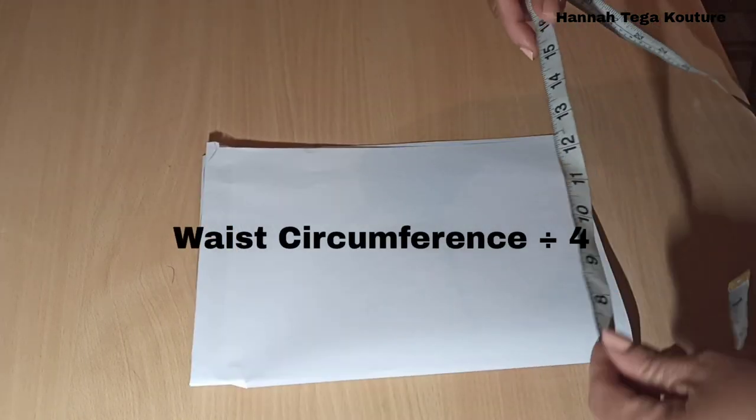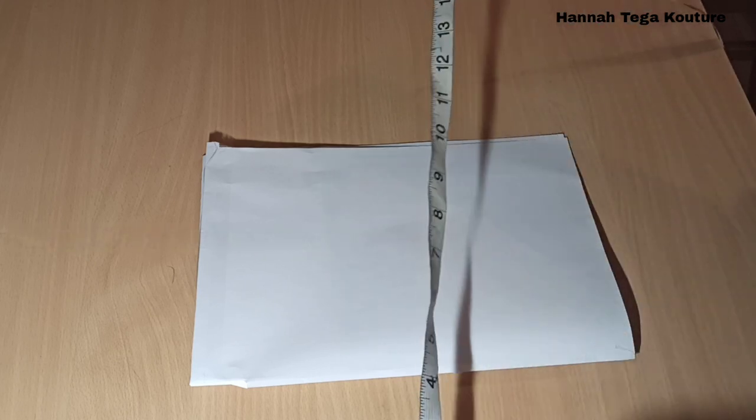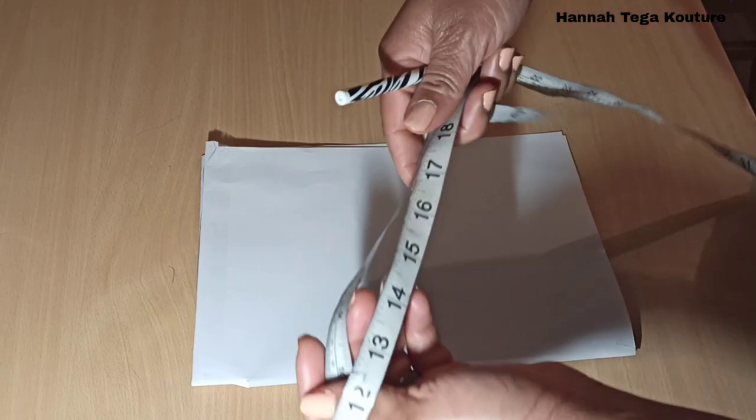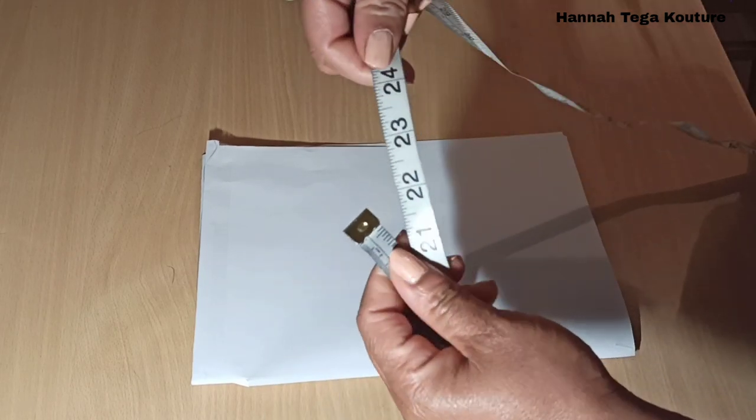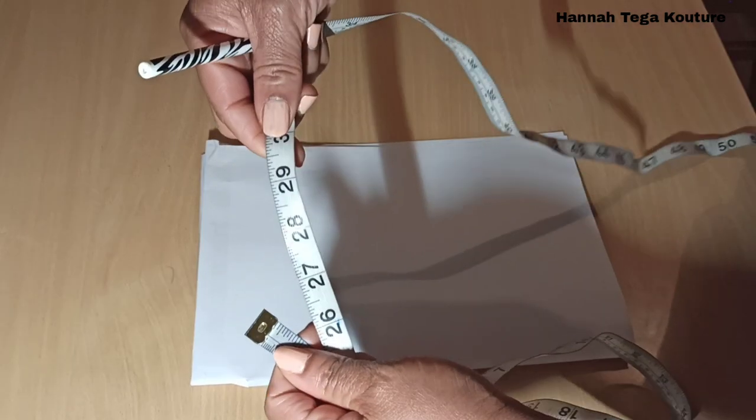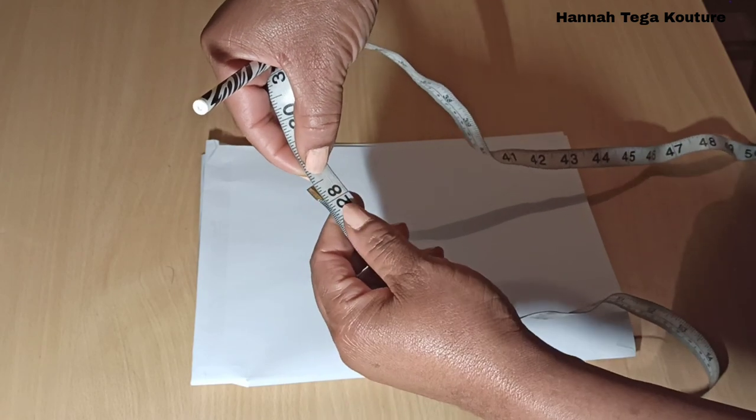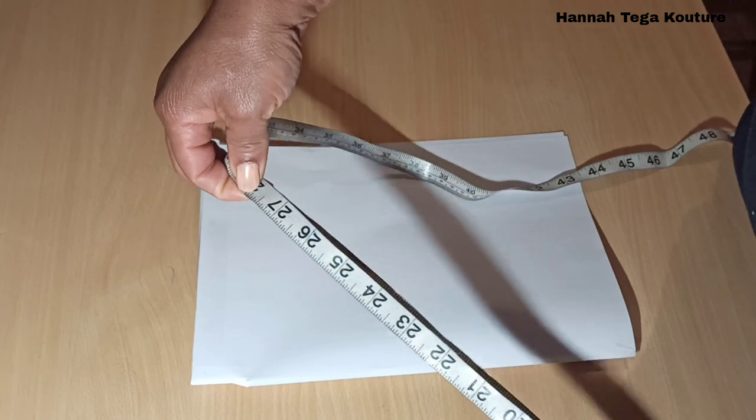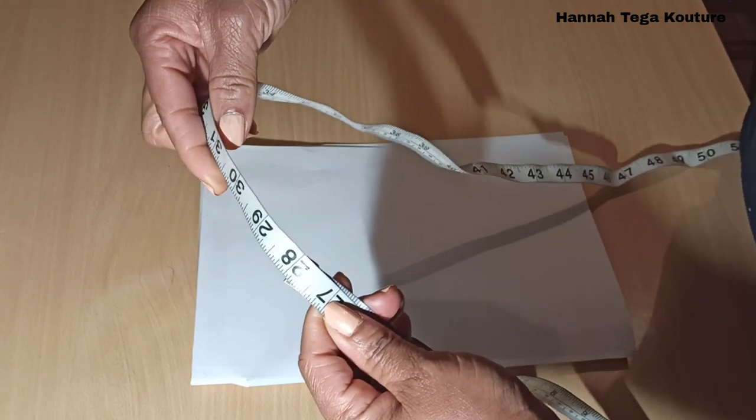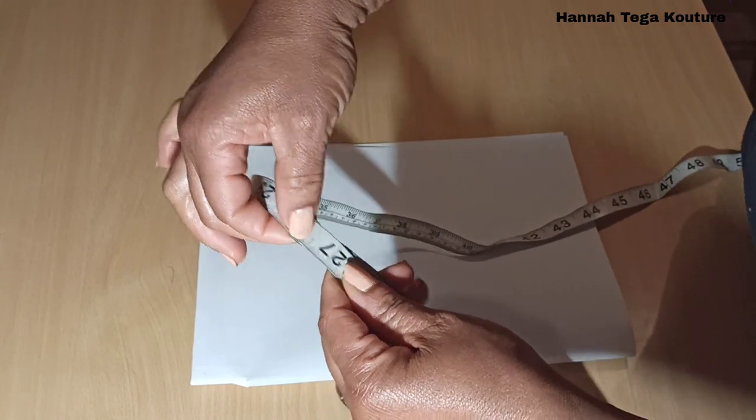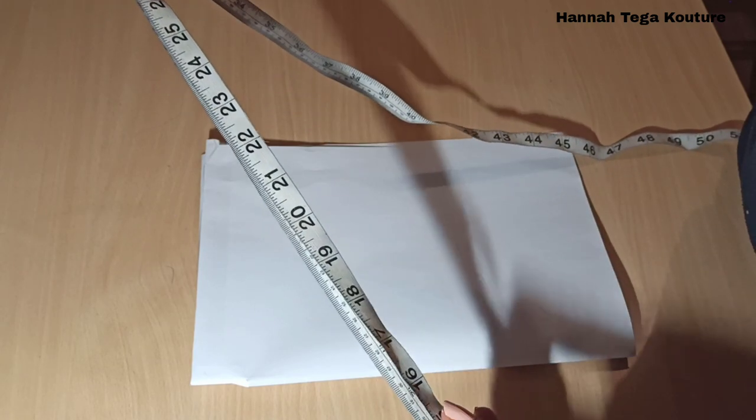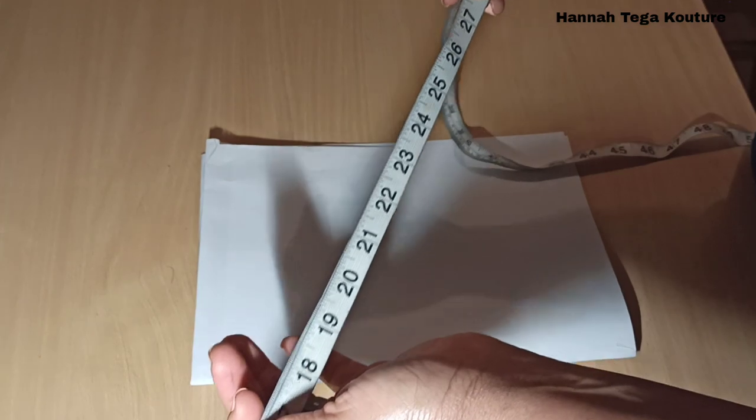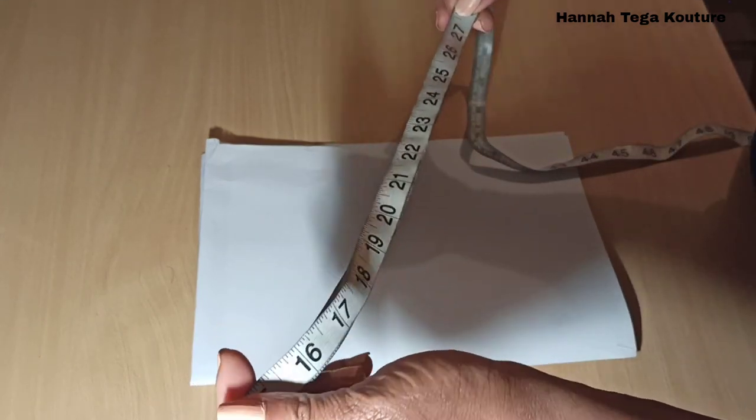We're not going to be using a lot of calculations; we're just going to go with the traditional way of making a circle skirt. So here I'm taking 28 inches for the waist circumference. When you divide that by two you have 14, and when you divide 14 inches by two you would have seven inches. So if you're using the tape to divide, you would do it this way.